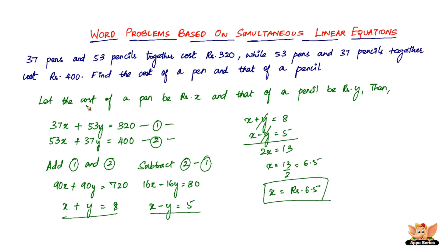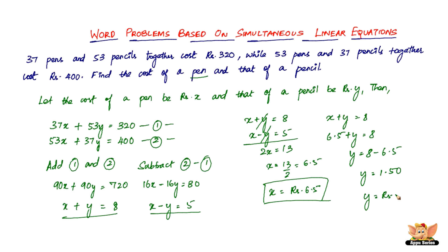Adding these two equations, the y terms cancel: 2x equals 13, so x equals 13 divided by 2, which is 6.5. Therefore, the cost of a pen is rupees 6 and 50 paise. Substituting x equals 6.5 into x plus y equals 8, we get y equals 8 minus 6.5, so y equals 1.50 — that is, rupees 1 and 50 paise, the cost of one pencil.